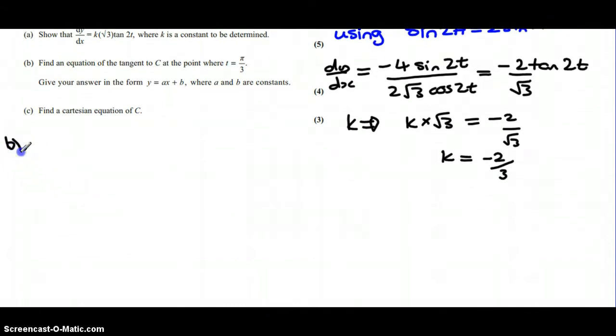For part b we need to find the tangent, so we're going to need the gradient which is dy by dx, and we're going to have to substitute in our value for t that they give us in the question, which is pi over 3. So we'll have 2 lots of t, so that's 2 pi over 3.